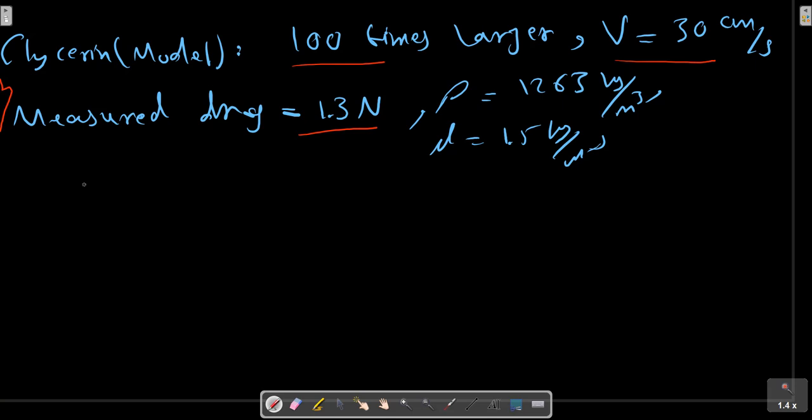In this case we have Reynolds number as dimensionless number. For the similarity, we have rho V L over mu, relation for Reynolds number. In this case we should make an equality between model M and the prototype.